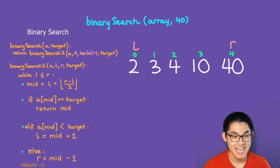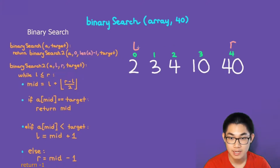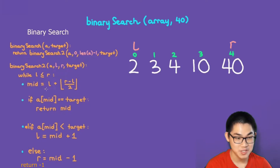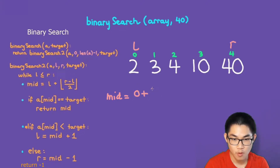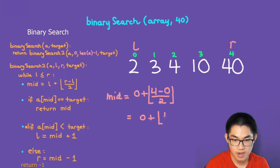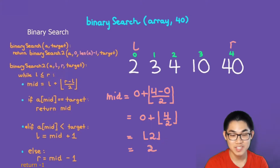Now we ask ourselves: is left smaller or equal to right? Yes, because left is at index 0 and right is at index 4, so left is smaller than right. The next step is to calculate the middle. The mid equals left (which is 0) plus the floor of (R minus L) over 2. So that's 0 plus floor of 4 divided by 2, which gives you 2. Mid is at index 2.